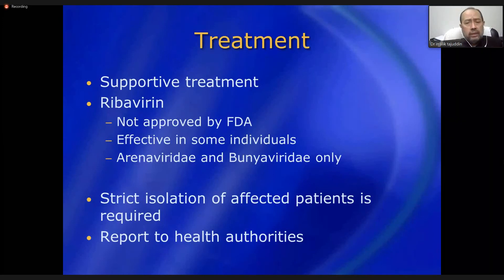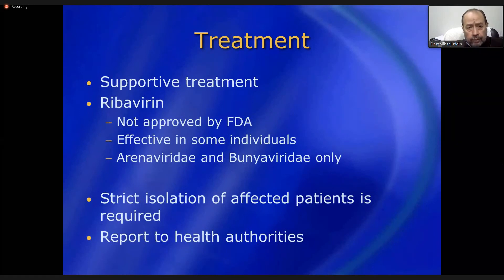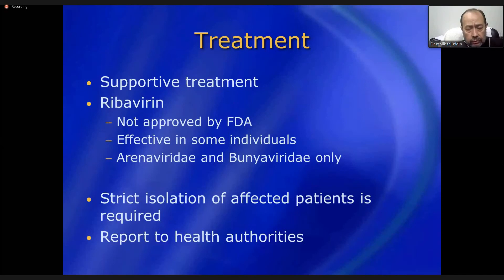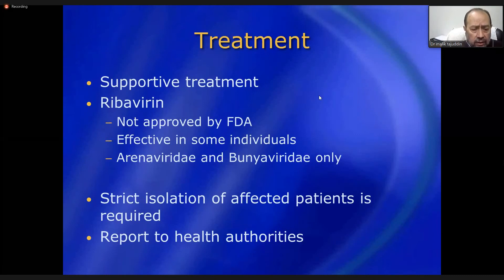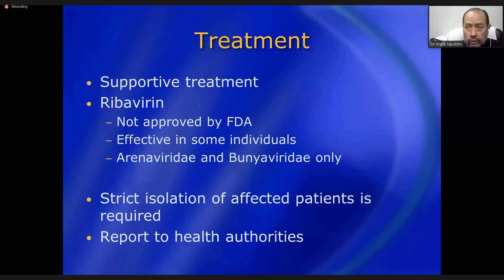There is no specific treatment for dengue fever or dengue hemorrhagic fever — only supportive treatment. This includes paracetamol as an antipyretic and painkiller, and most importantly, plenty of fluids to maintain hydration and electrolyte balance, preventing the patient from going into shock. Antiviral drugs are not recommended for dengue hemorrhagic fever. Strict isolation of the affected patient is required to prevent spreading the disease via mosquitoes.